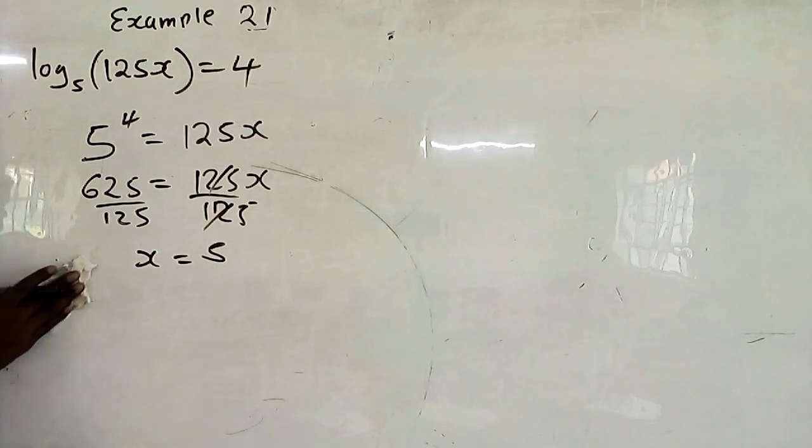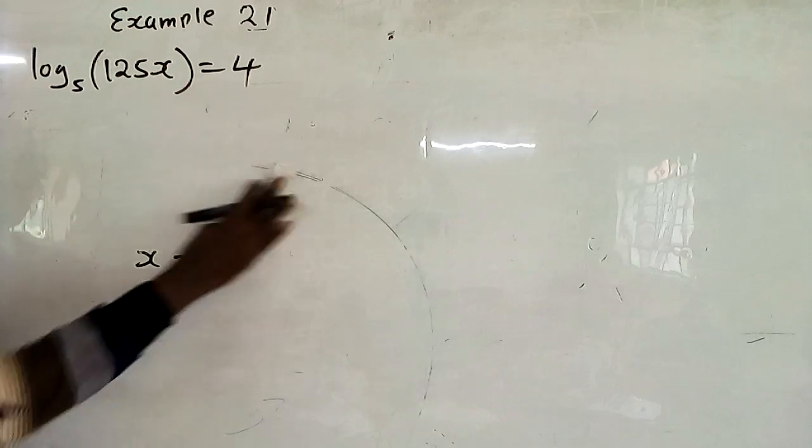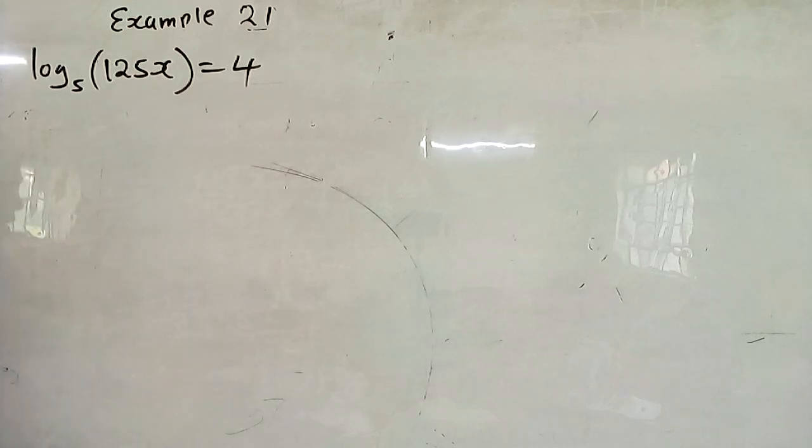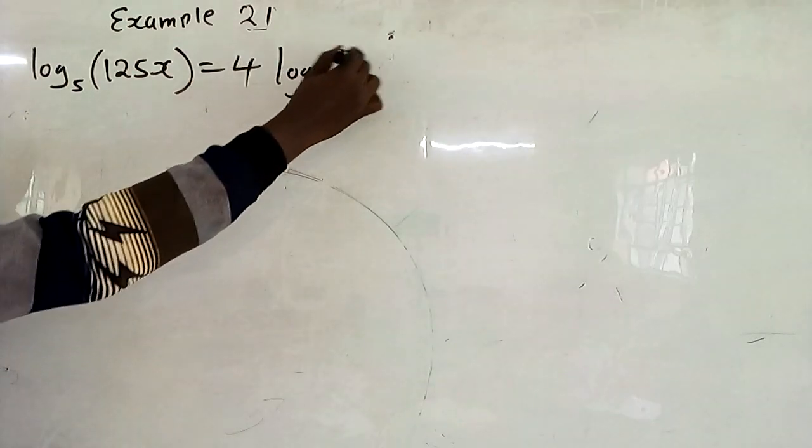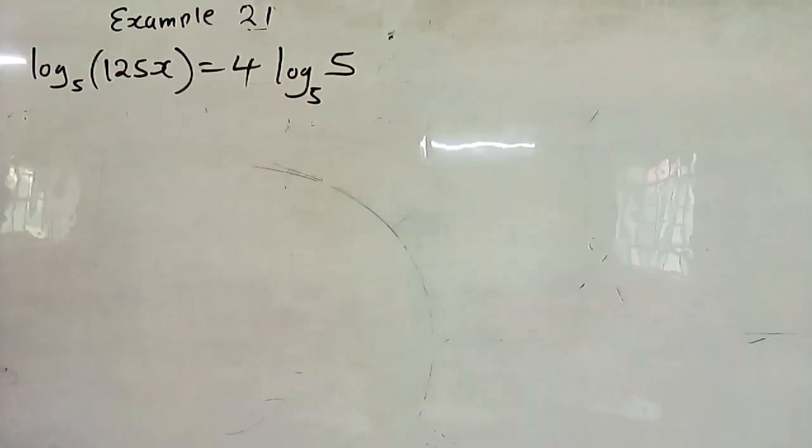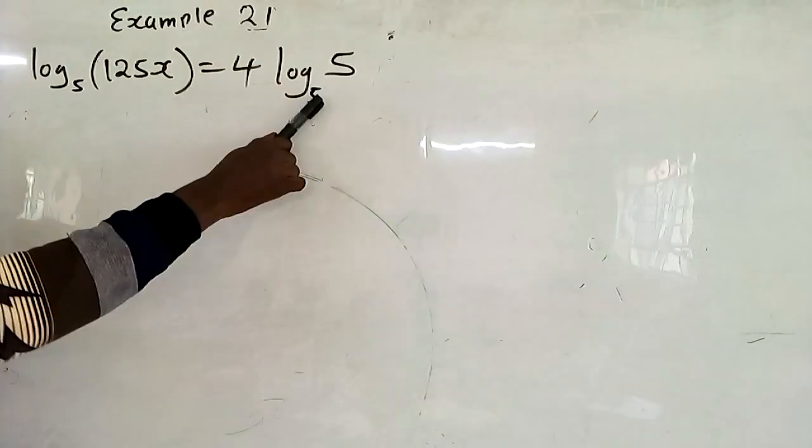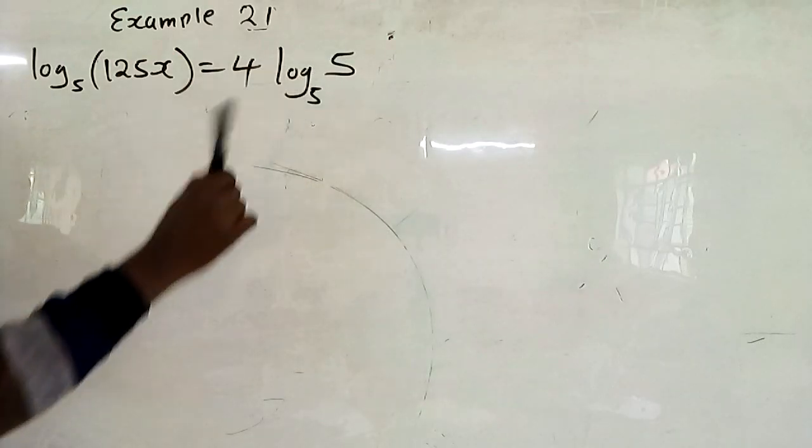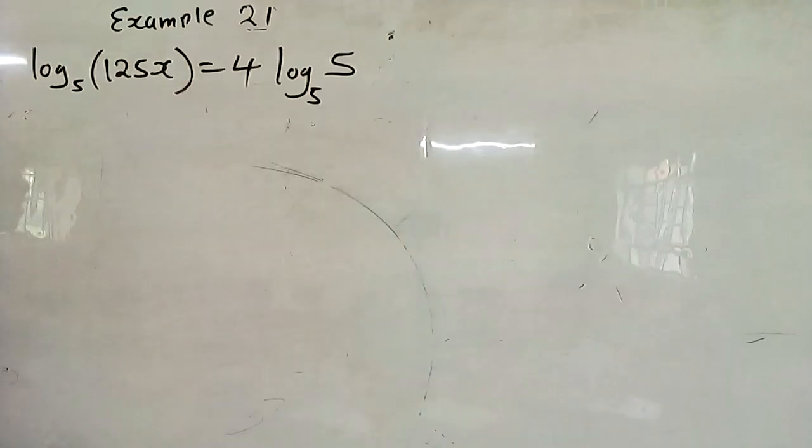But again, you can solve it using laws of logarithms. So laws of logarithms, this is how you do it. This is log to base 5. Meaning from the other side of the equation, you introduce log to base 5. And the only log you can introduce is log 5 to base 5. Meaning a log of a number to the same base is always 1.